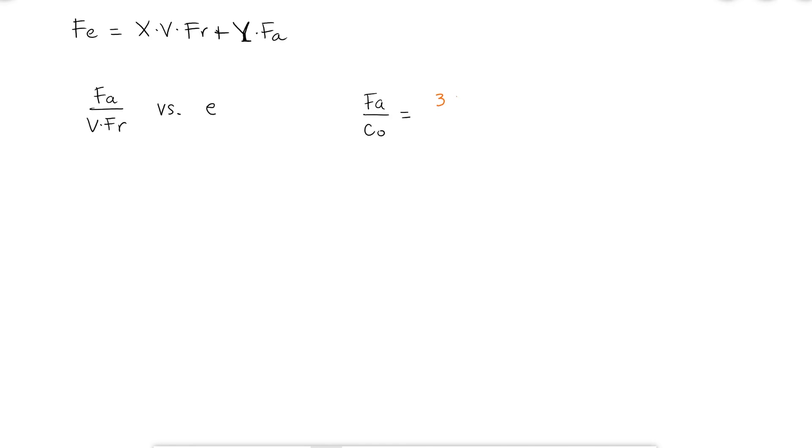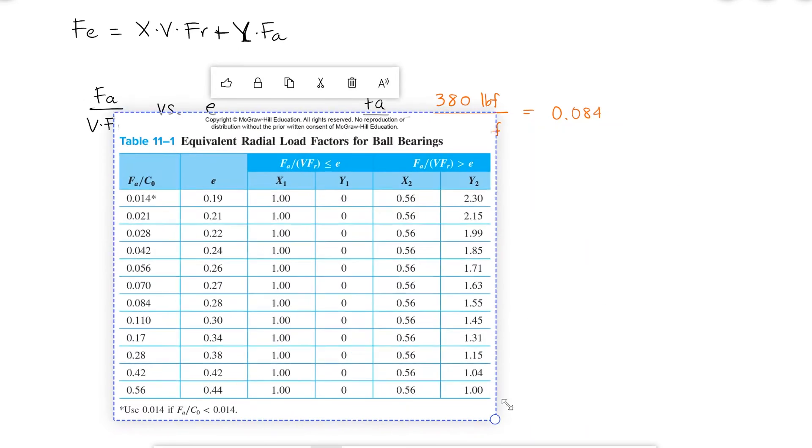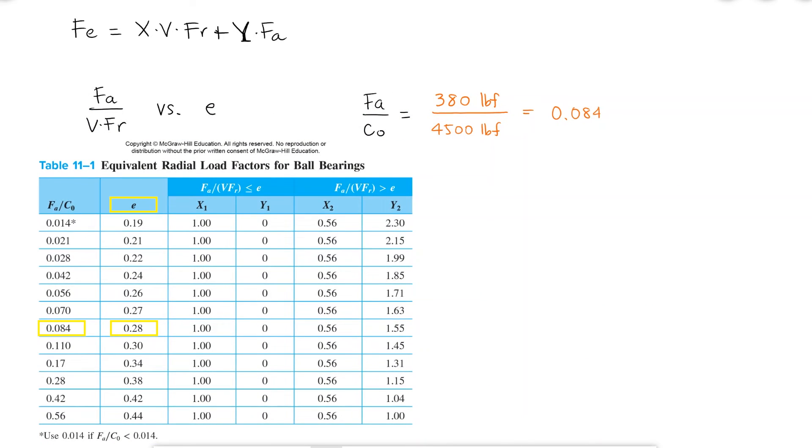With the given thrust of 380 pounds and the static load rating of 4500 pounds, I find a value of 0.084 that will allow me to find the E value.